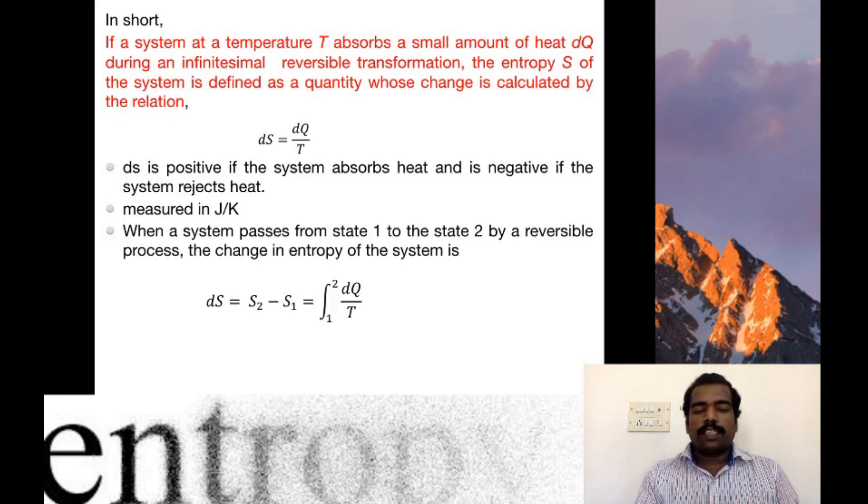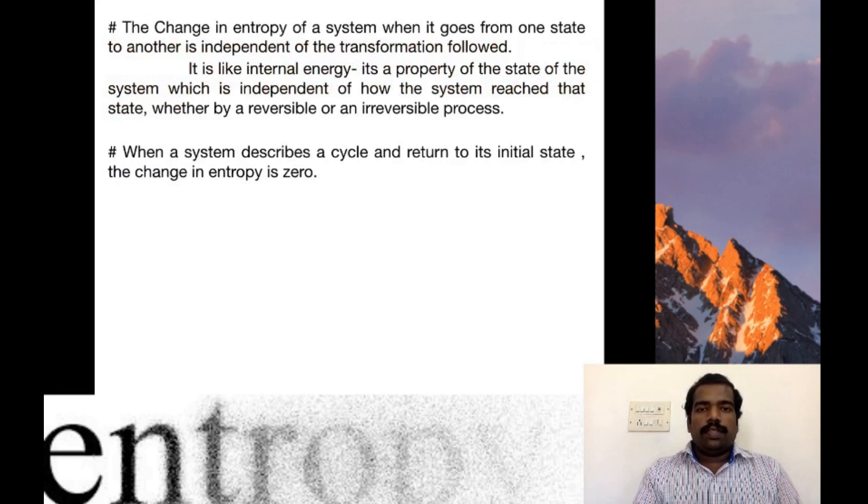When a system passes from state 1 to state 2 in a reversible process, the change in entropy of the system is given by dS = S2 - S1 = integral from state 1 to state 2 of dQ/T. From this relation, we can say the change in entropy of the system when it goes from one state to another is independent of the transformation it follows, which means it is a property of the state of the system, just like the internal energy, independent of how the system reaches that state, either by reversible or irreversible process. It depends only on the initial and final state of the system.